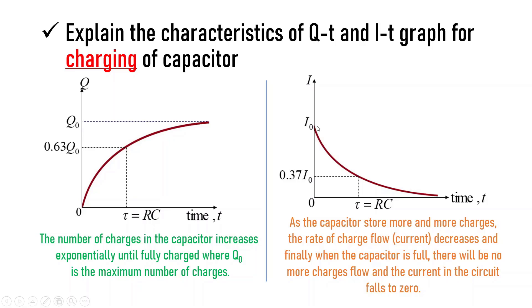Meanwhile, for I against t, as the capacitor stores more and more charges, the rate of charge flow, which is the current, decreases. Finally, when the capacitor is full, there will be no more charge flow and the current in the circuit falls to zero.